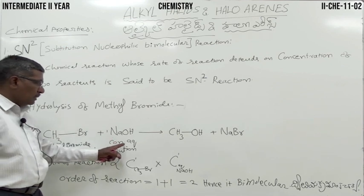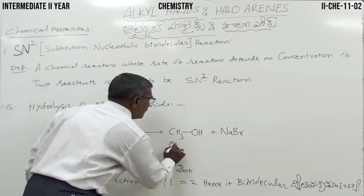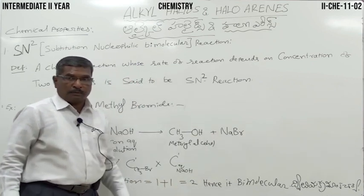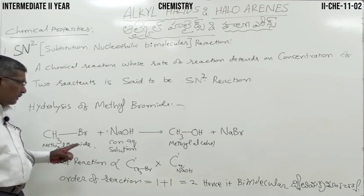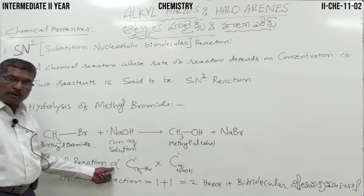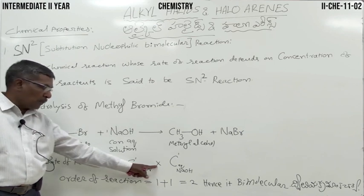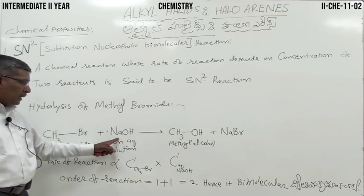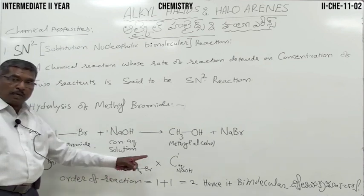Methyl bromide reacts with the concentrated aqueous solution of sodium hydroxide to form methyl alcohol and sodium bromide. This is the best example for SN2 reaction. According to the law of mass action, rate of reaction is directly proportional to the product of concentration of two reactants — methyl bromide is one reactant and sodium hydroxide is the other reactant.